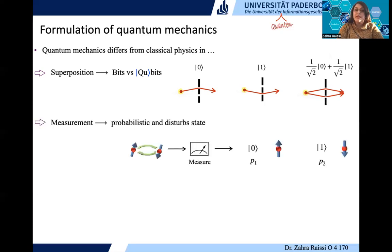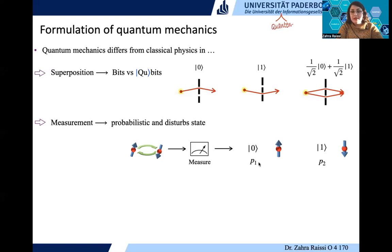One other difference between quantum mechanics and classical mechanics is measurement. Whenever we have a classical system, we can do the measurement and the results are not probabilistic — they are certain — and we don't change the system. But in quantum mechanics, the results are probabilistic. We start from a quantum system in superposition, we do the measurement, and with probability p1 we get spin up or ket0, and with probability p2 we get spin down or ket1. So the results are not certain, and also the system changes — we start with a superposition and end up with no superposition.